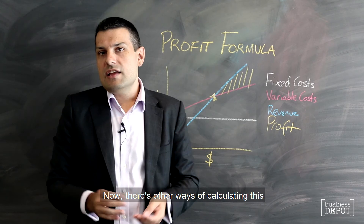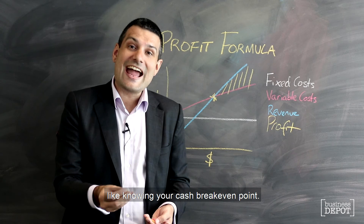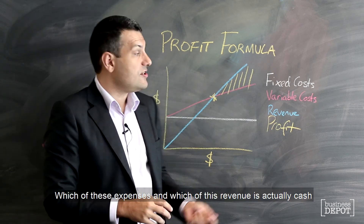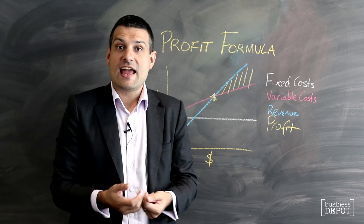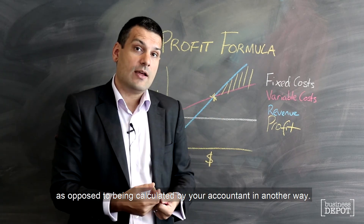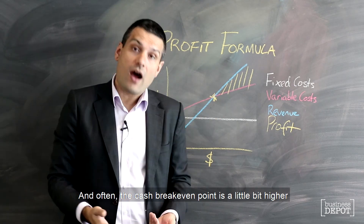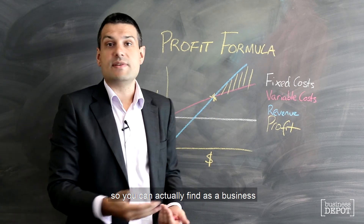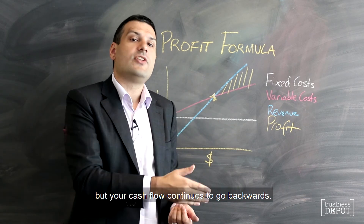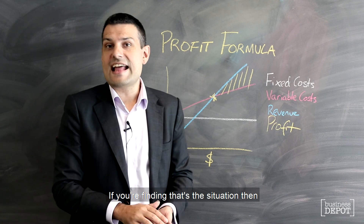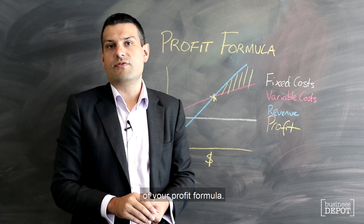Now there are other ways of calculating this, and there are other more complicated elements — like knowing your cash break-even point: which of these expenses and which of this revenue is actually cash, as opposed to being calculated by your accountant in another way. Often the cash break-even point is a little bit higher, so you can actually find as a business that you exceed the break-even point we've calculated today, but your cash flow continues to go backwards. If you're finding that's the situation, then you definitely need to do a more detailed analysis of your profit formula.